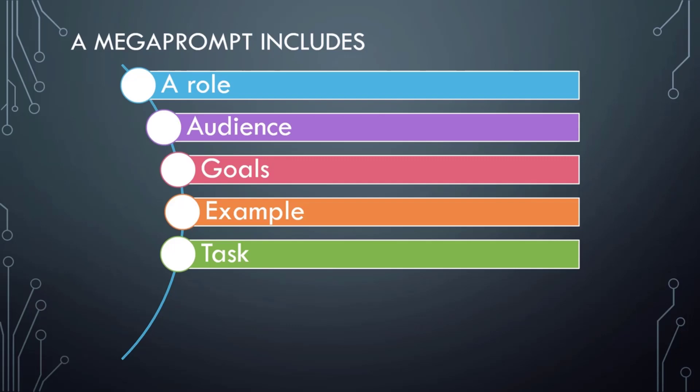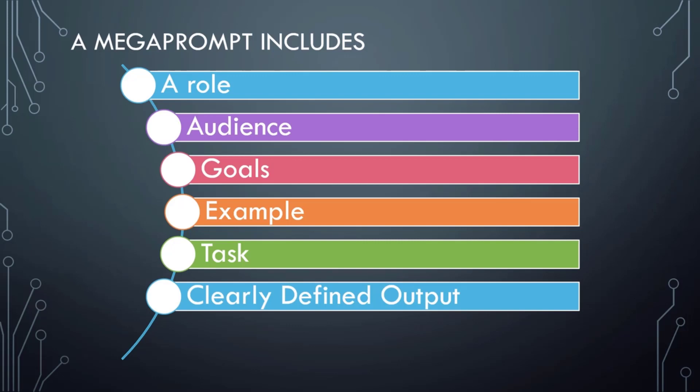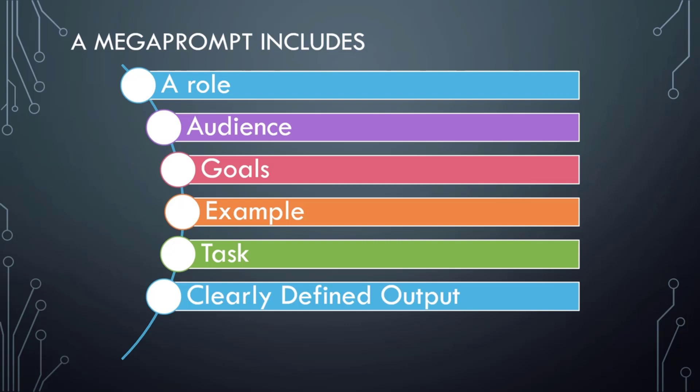Provide a task: clear instructions on what you want the AI to do and how. If you've already given it the role, audience, goals, and an example, you would say 'using the information above, generate' and then a clearly defined output — tell the AI how to present the information it generates. Lastly, include a title and topic; if you are using this same role for many outputs, give it the topic of each request to use as a title.